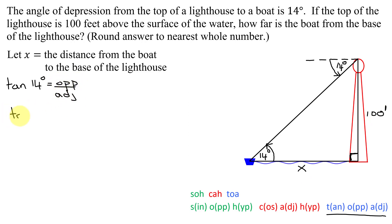So the tangent of 14 degrees equals the opposite side is 100. The adjacent side is X. So since the variable I'm looking for is in the denominator, I'm going to multiply both sides by X.